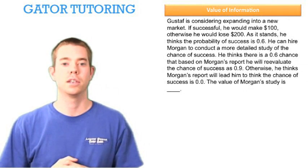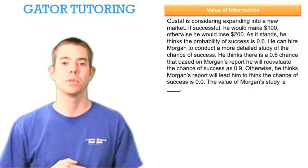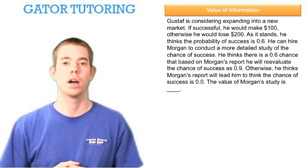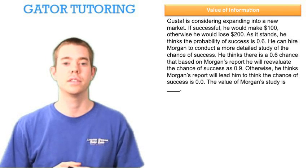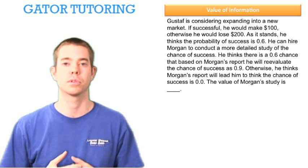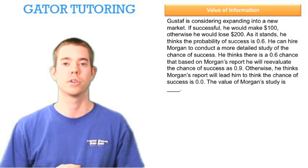Gustaf is considering expanding into a new market. If he's successful, he'll make $100; otherwise he'll lose $200. As it stands, he thinks the probability of success is 60%, which means he thinks the probability of failure is 40%.